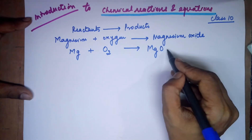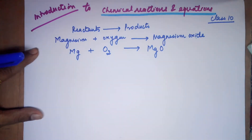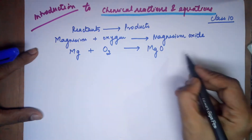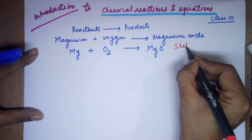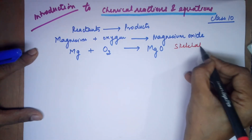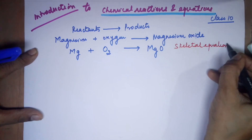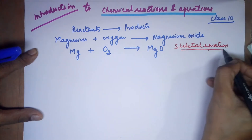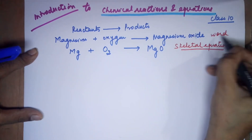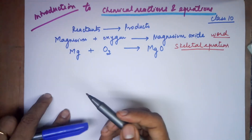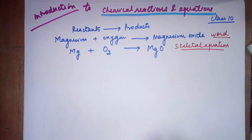Writing the reaction in this format — using chemical formulas — is known as your skeletal equation. The first form is called as the word equation, and the second is known as the skeletal equation.